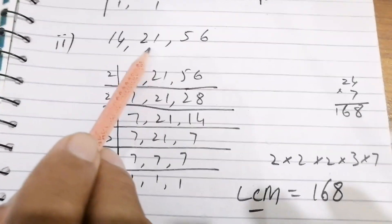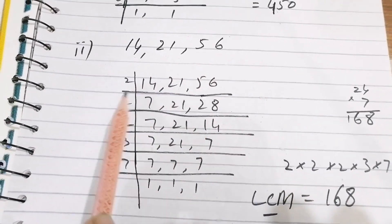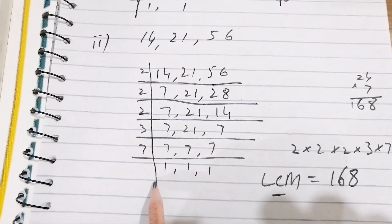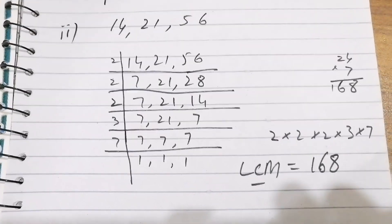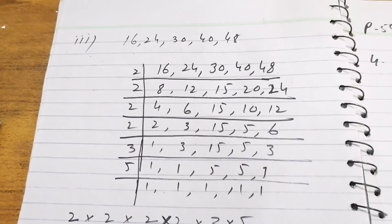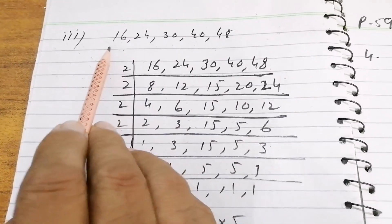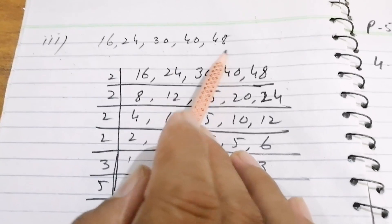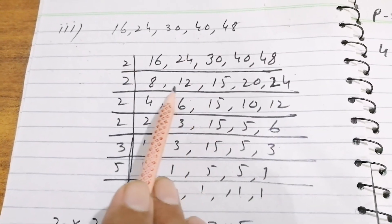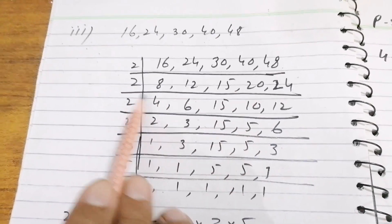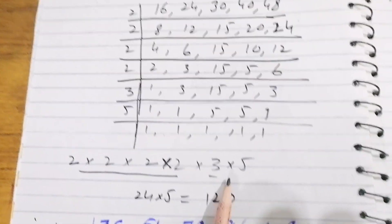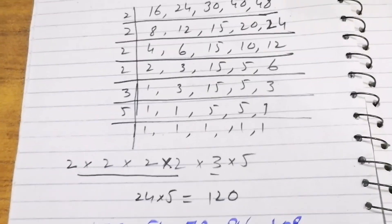The second part is 14, 21, and 56. Dividing by suitable numbers, we get all the factors and then multiply them to get the answer 168. The third part is 16, 24, 30, 40, and 48. We keep them all together and start dividing by 2. Multiplying all the factors together, we get LCM = 120.